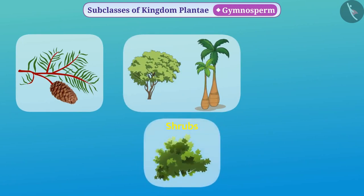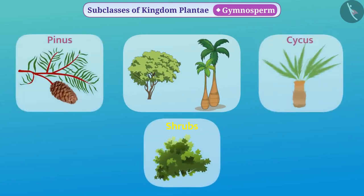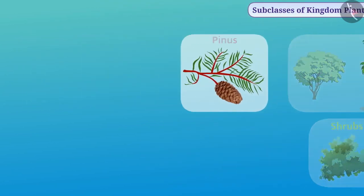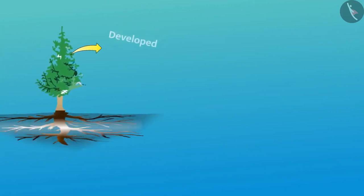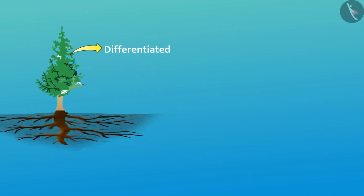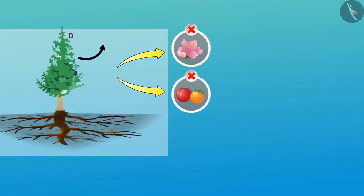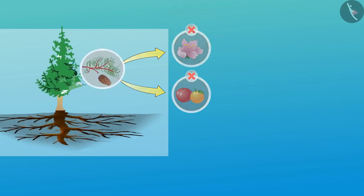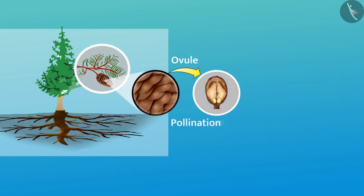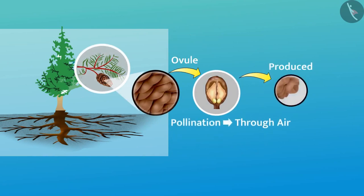Gymnosperms include medium or tall trees and shrubs such as pinus and cycas. These plants are perennial and woody. The body of gymnosperms is fully developed and differentiated into different parts like root, stem, and leaves, but they lack flowers and fruits. The lack of flowers and fruits makes them different from angiosperms. Since gymnosperms do not have flowers, ovules are in the open state, and pollination is mainly through air. The seeds produced after fertilization are also in an open state.